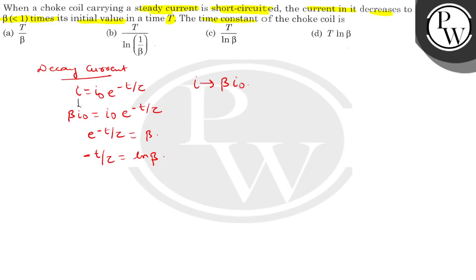So that's beta times its initial value in a time capital T.